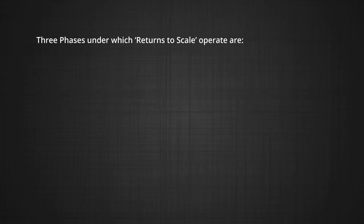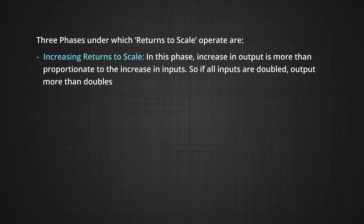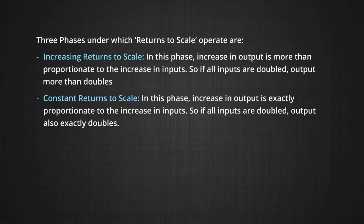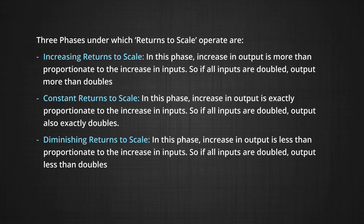Three types of returns to scale operate. First, increasing returns to scale — in this case, the increase in output is more than proportionate to the increase in inputs. For example, if all inputs are doubled, under increasing returns to scale, output more than doubles. Constant returns to scale are said to exist when an increase in output is exactly proportionate to the increase in inputs — if all inputs are doubled, output also exactly doubles. Diminishing returns to scale is the case when the increase in output is less proportionate to the increase in inputs — if all inputs are doubled, output also increases, but it less than doubles.